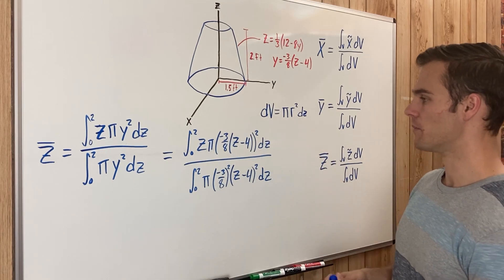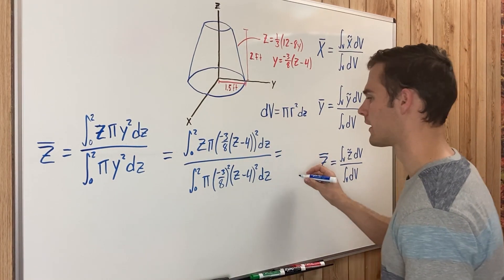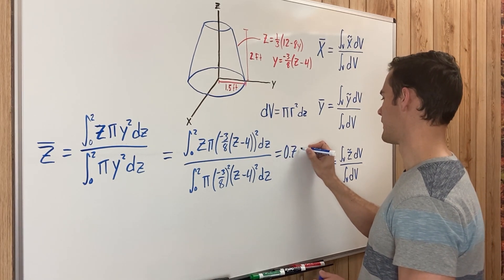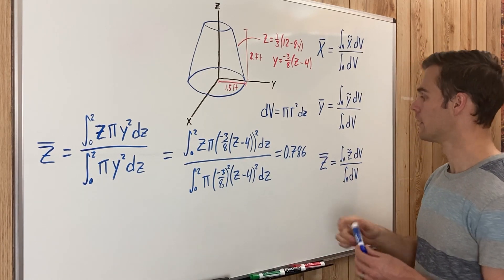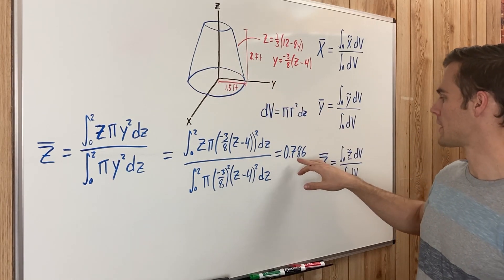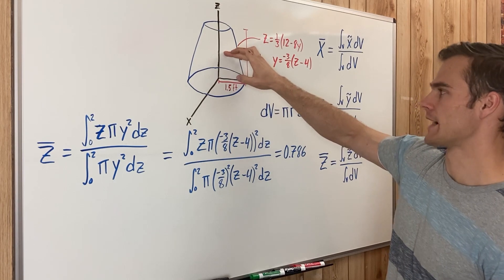And then now I'm not going to go through the calculus of all this, but if you were to, what you should get is 0.786 feet. So our centroid in the Z direction is going to be 0.786 feet up along the Z axis, and so that is where our centroid is going to lie.